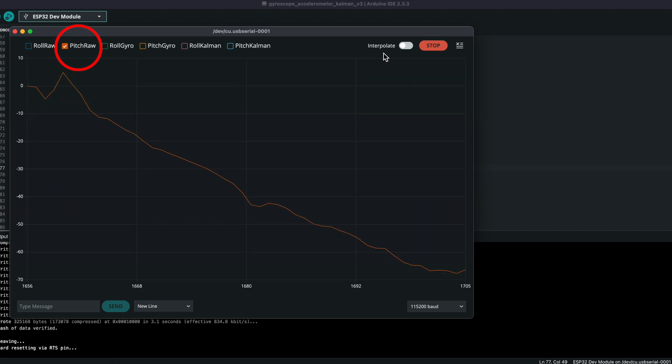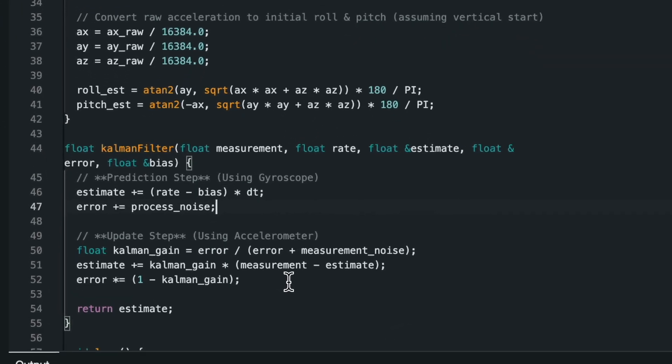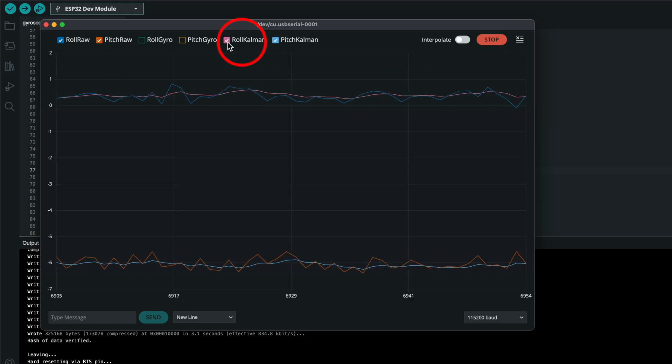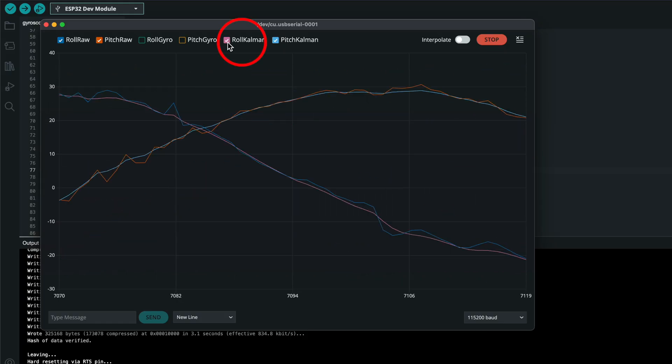The problem is that the accelerometer is noisy, and the gyroscope drifts, so we apply the Kalman filter. This way, we get a stable and accurate orientation estimate.